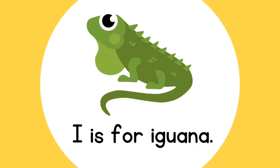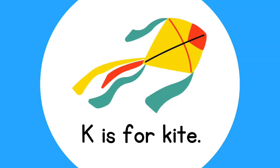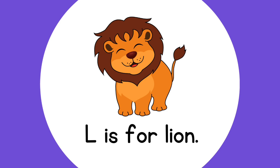I is for Iguana. J is for Jump. K is for Kite. L is for Lion.